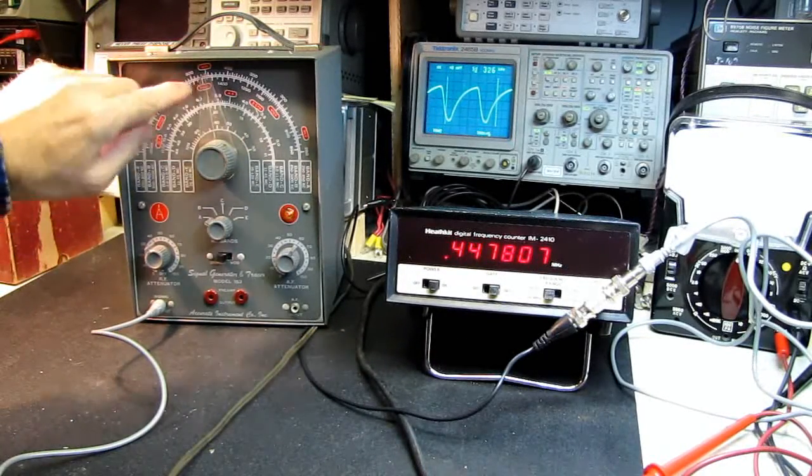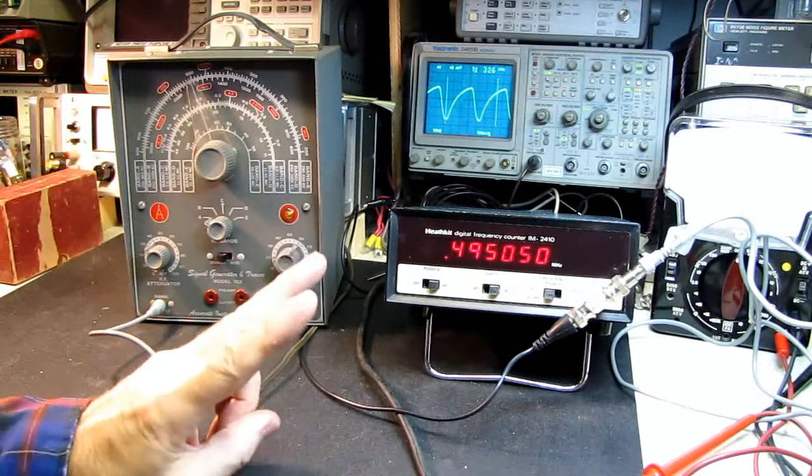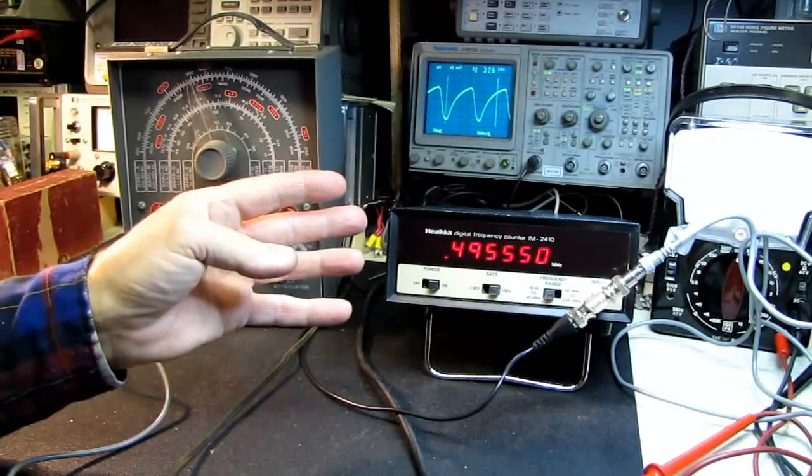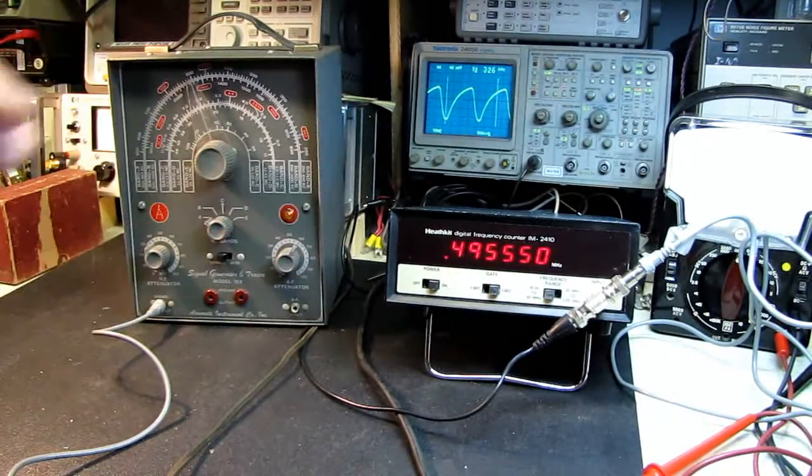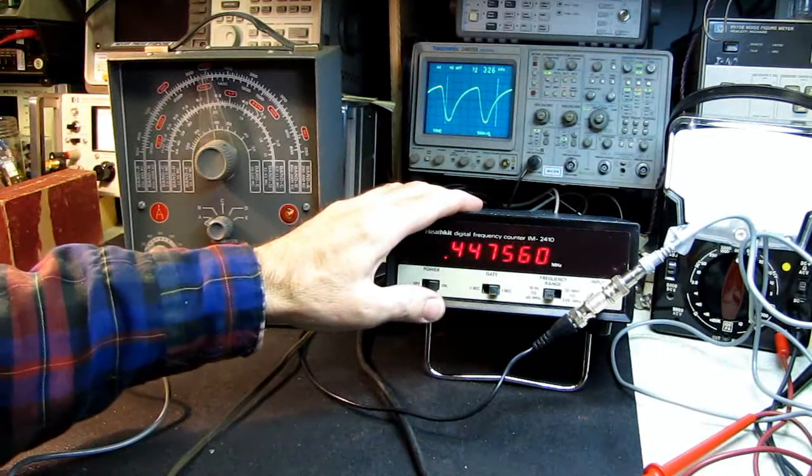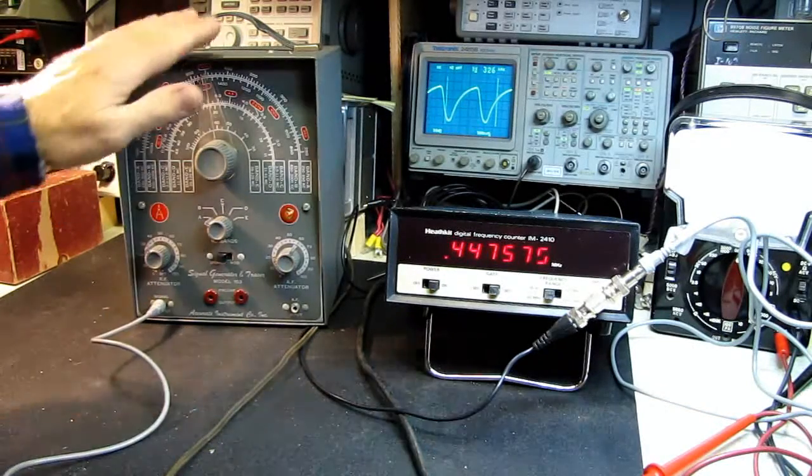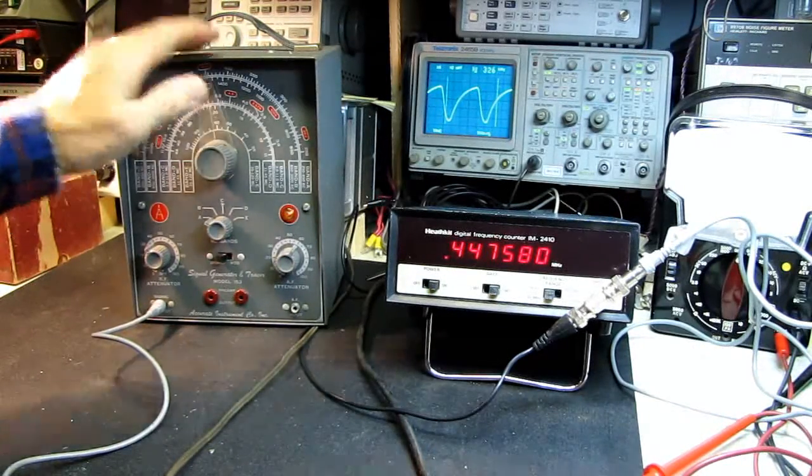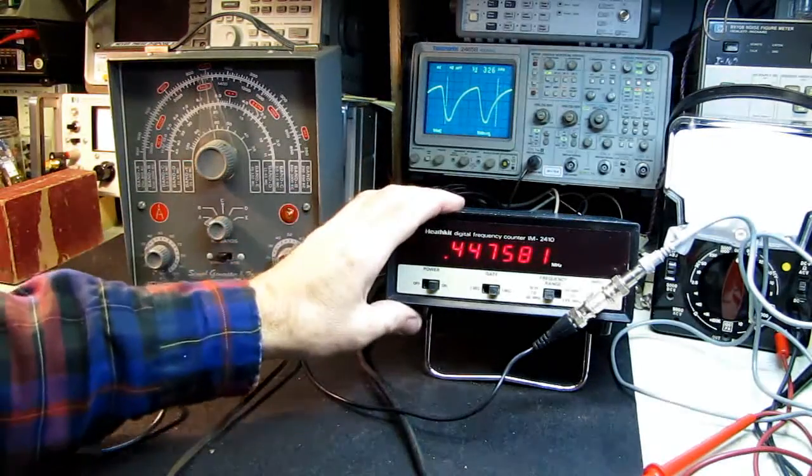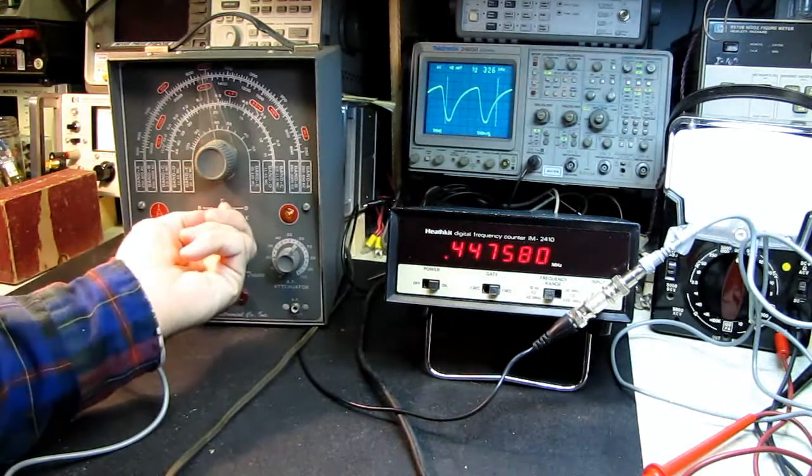The problem is, if there's an error here of let's say we're on 500 megahertz and we're off 200 hertz, when you double it you're going to be off 400 hertz. When you triple it you're going to be off 600 hertz and so on. However, if you have the backup of a frequency counter, you can still do some very good work with these older signal generators. They are very handy to have around from time to time.